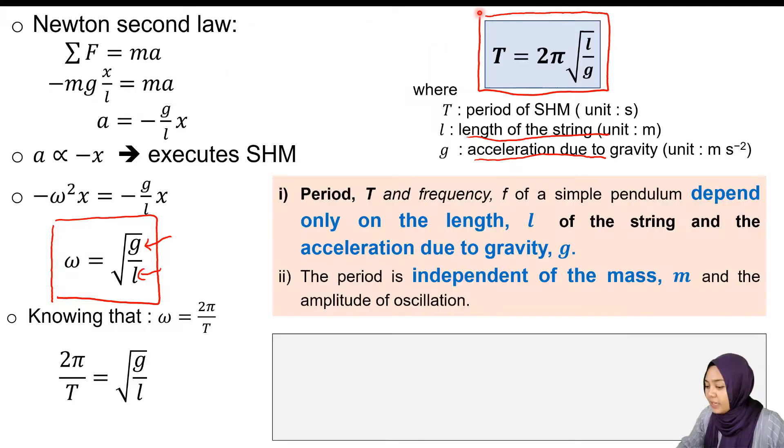Period and frequency of a pendulum depend only on the length and gravitational acceleration. Since we are on Earth, g is 9.81 m/s². The period is independent of the mass—it doesn't matter how big, small, light, or heavy the pendulum bob is. It also doesn't depend on the amplitude, but there are certain conditions we have to meet before we can use this period equation.